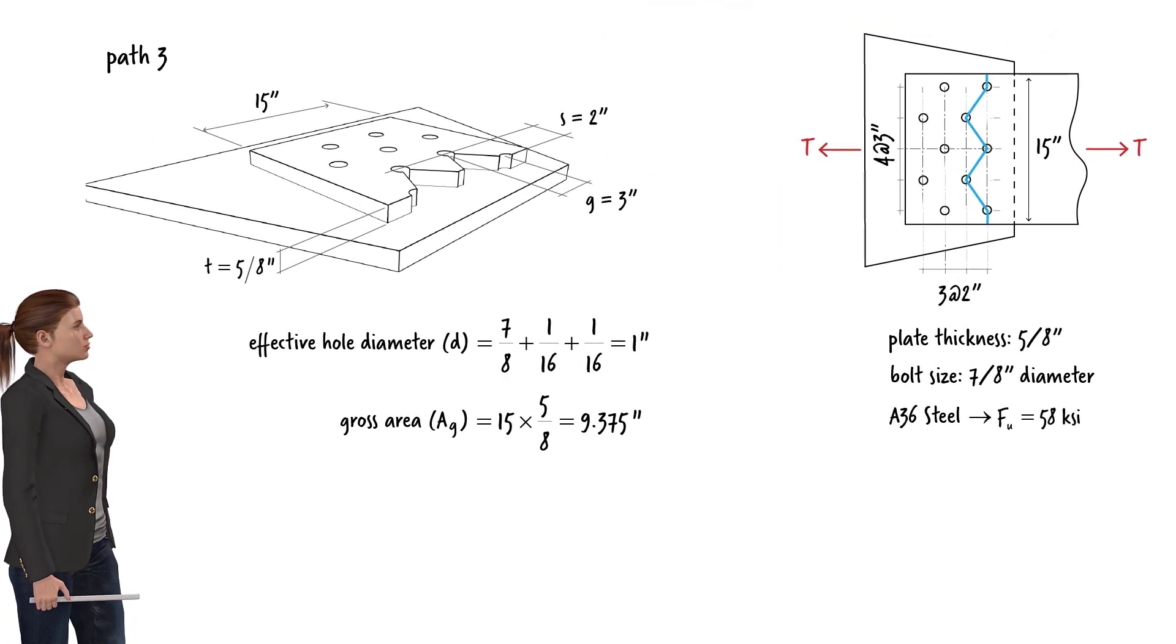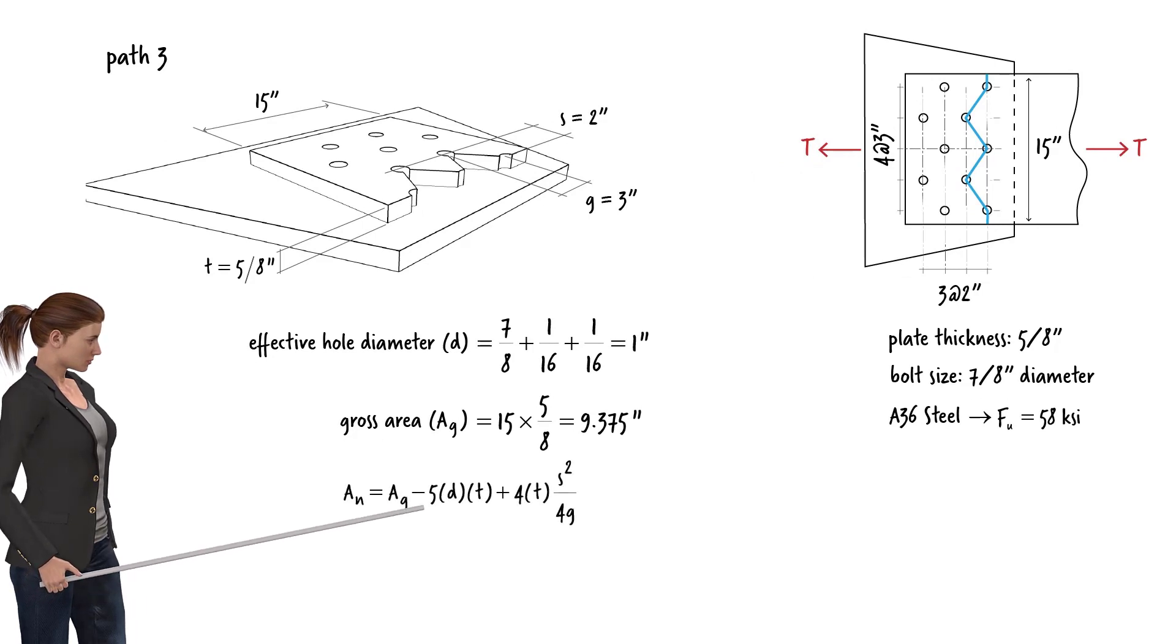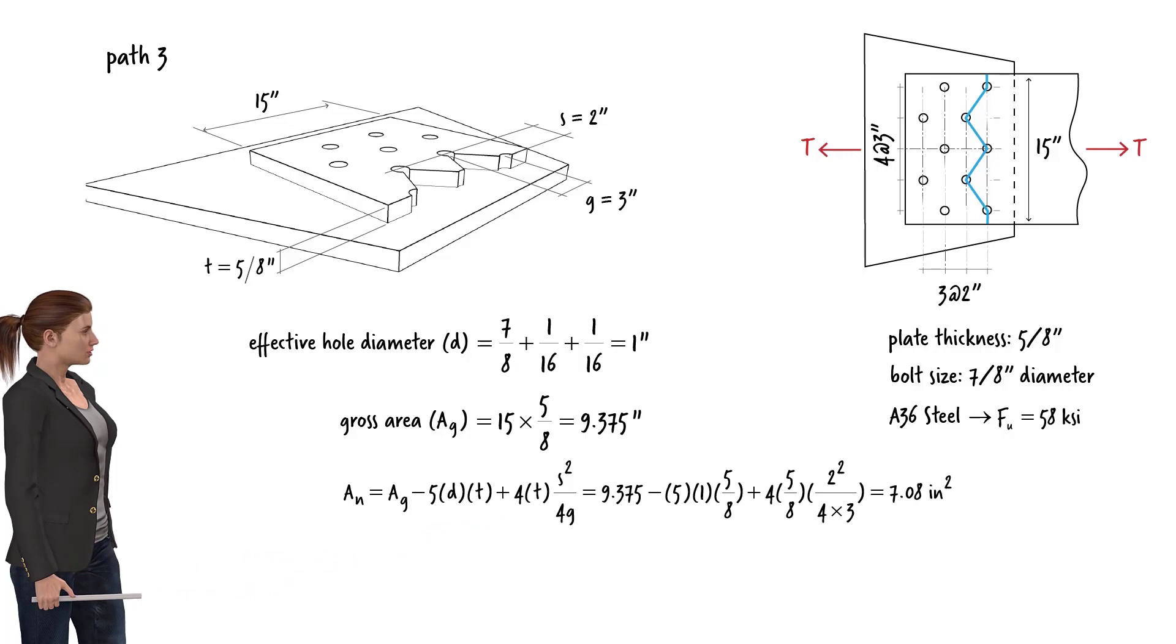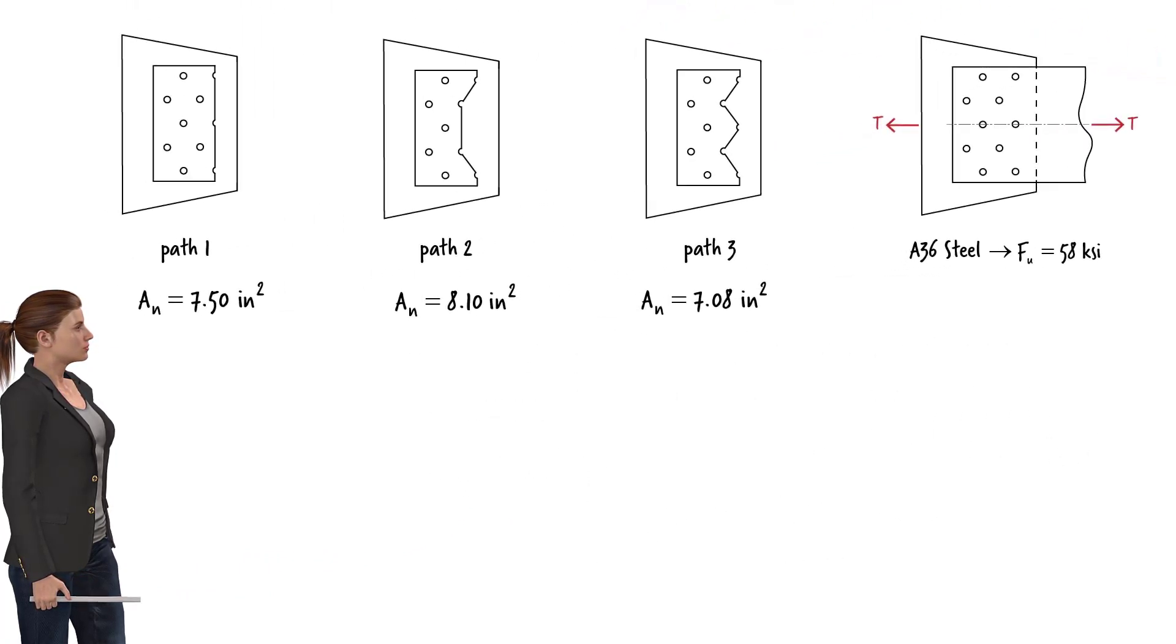For path 3, the net area can be written as... Here there are five holes and four inclined lines along the path. In summary, the three net areas are... Since path 3 produces the smallest net area, it controls the design.